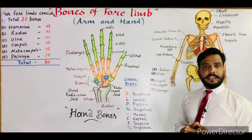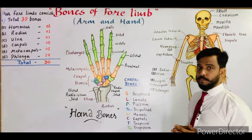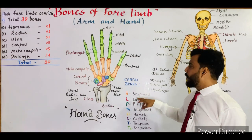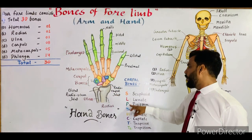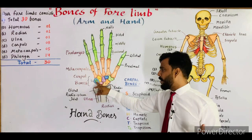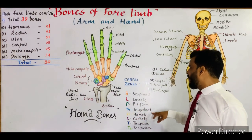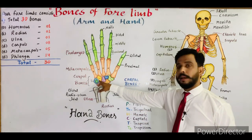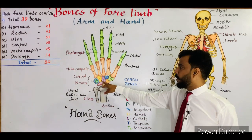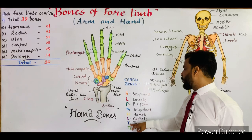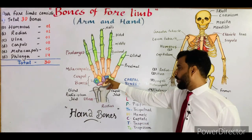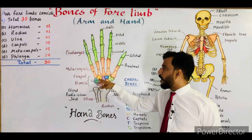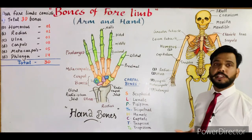All eight carpal bone names are very important. Number one is the scaphoid bone — a boat-shaped bone. Second is the lunate bone. Third is the pisiform — a small pea-shaped bone. Fourth is the triquetral bone. Fifth is the hamate bone. Sixth is the capitate — a purple-colored bone. Seventh is the trapezoid, denoted as T. And eighth is the trapezium, denoted as Tz. These are the eight carpal bones.